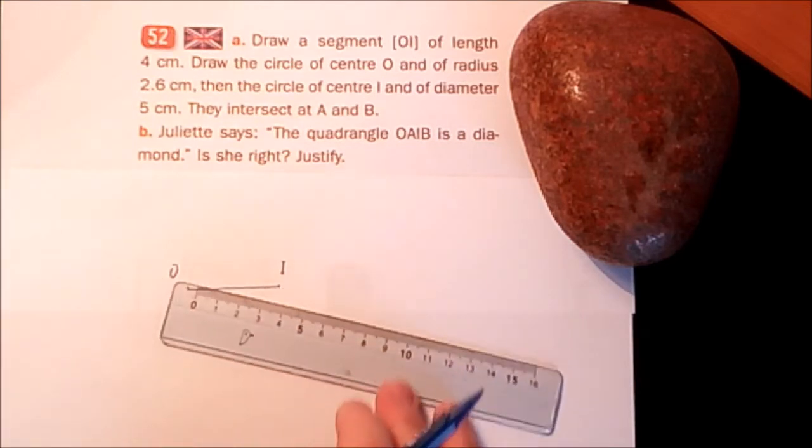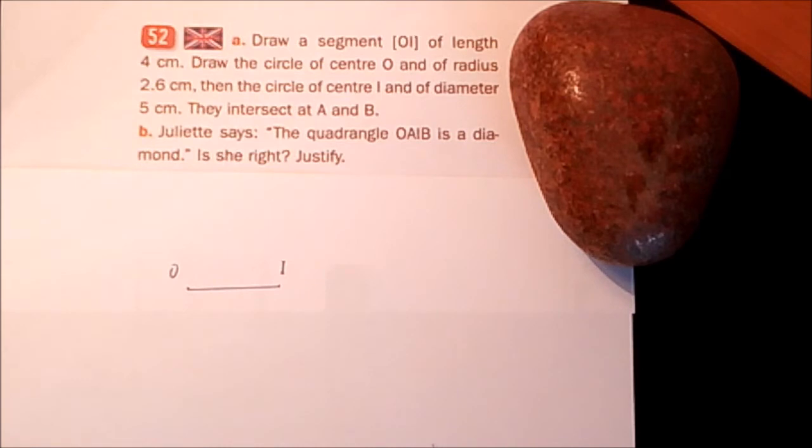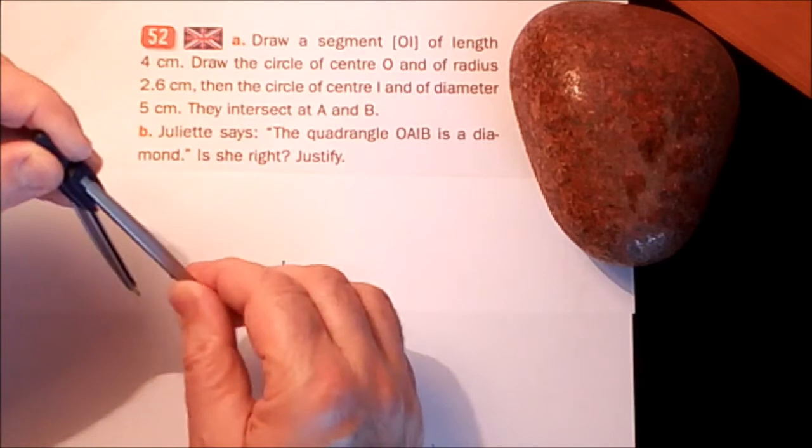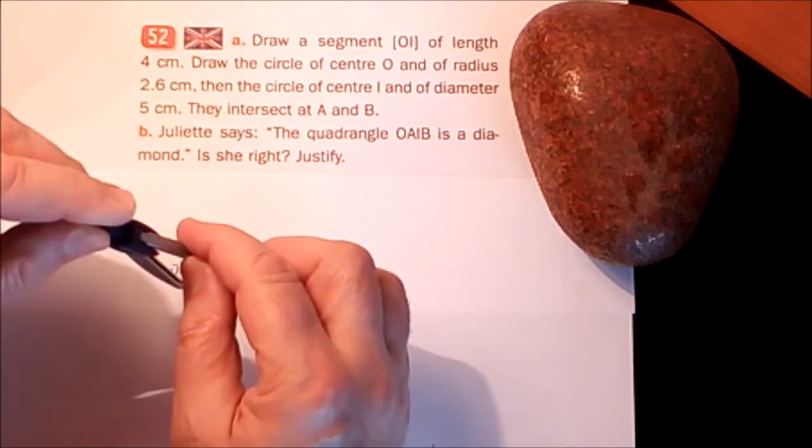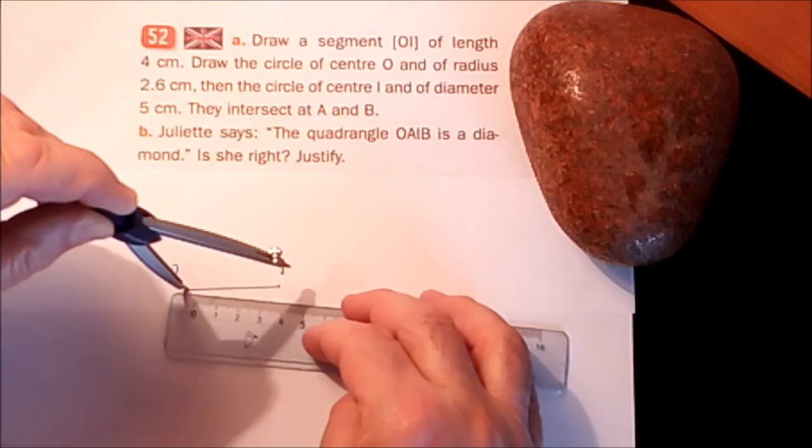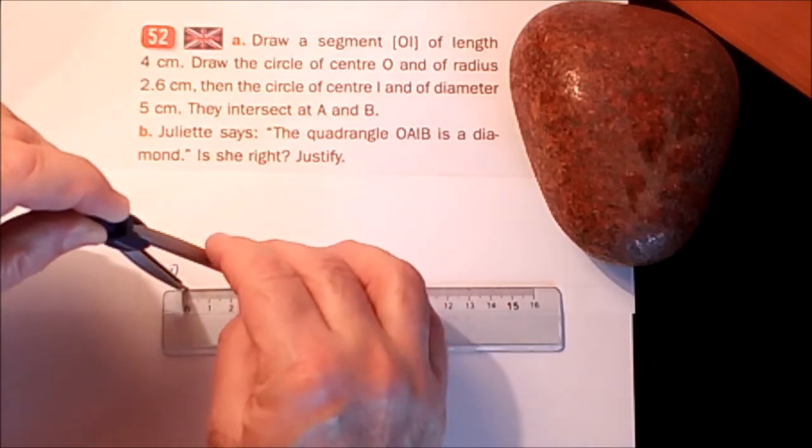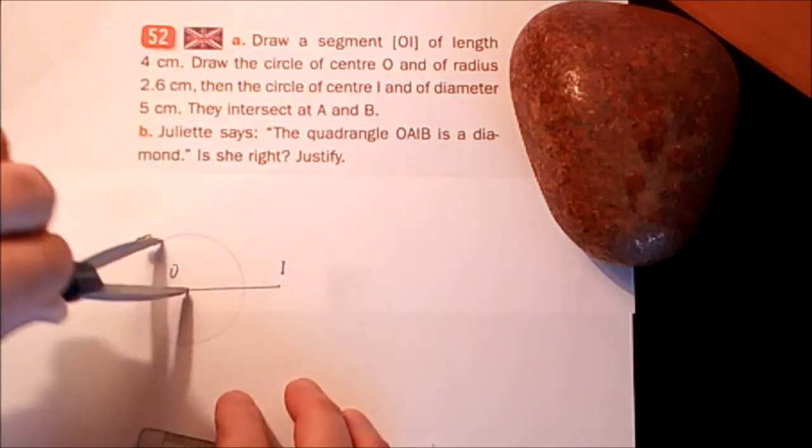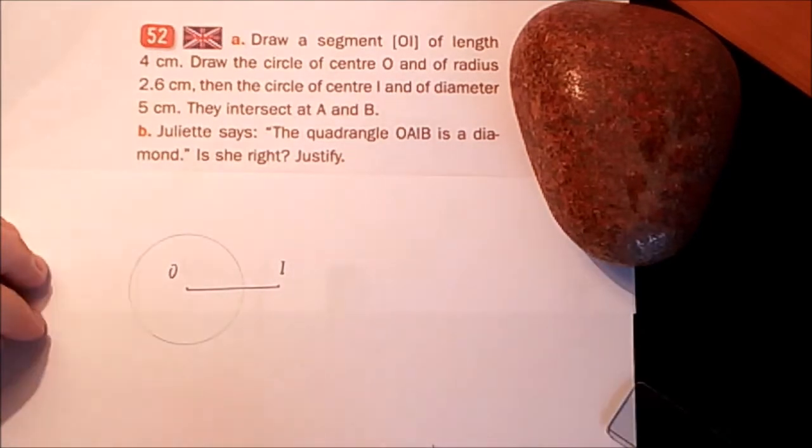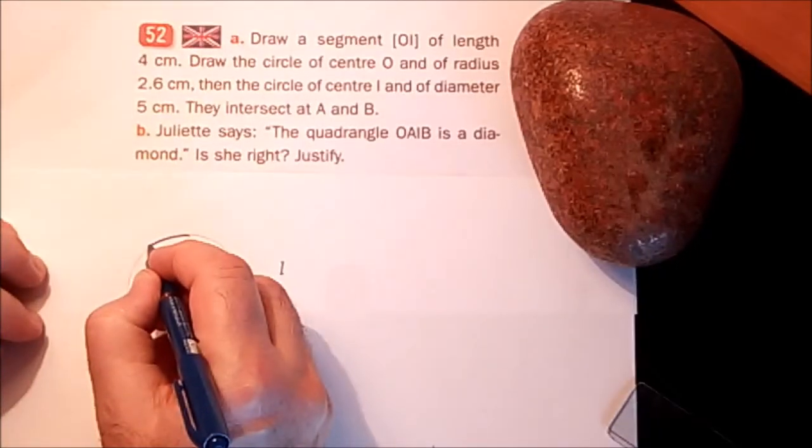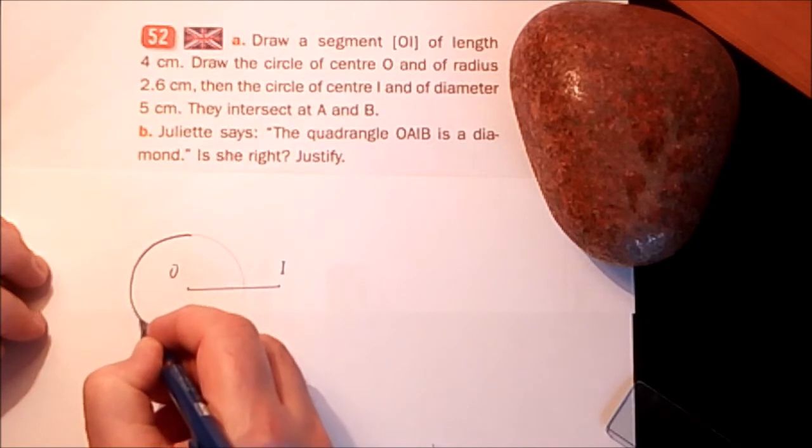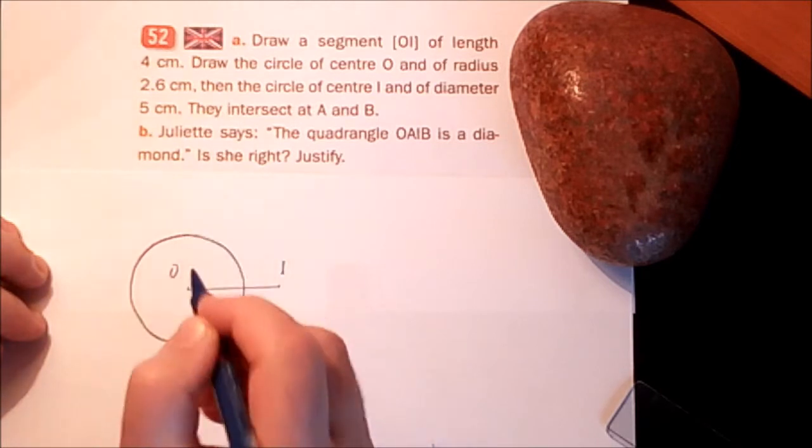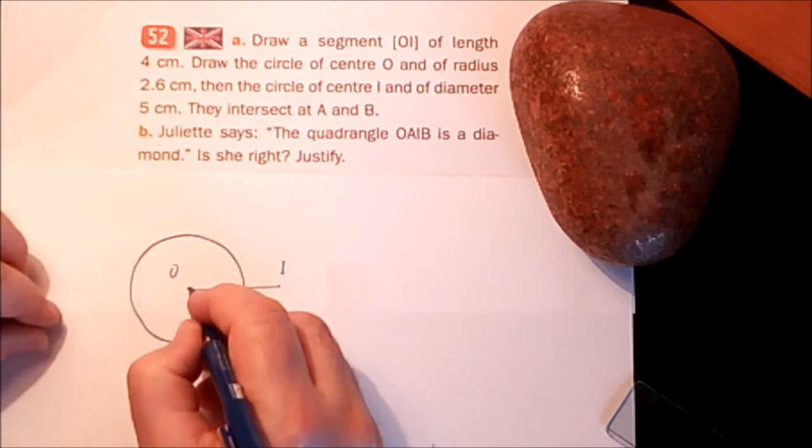Draw the circle of centre O and of radius 2.6 cm. Centre O, rayon 2.6 cm. Je trace le cercle et je le mets encore une fois comme un arplat. Et voilà. Rayon 2.6 cm. D'accord.